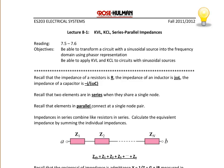Today we will start Lecture 8-1 on KVL-KCL Series and Parallel Impedances, from reading chapters 7.5 to 7.6. At the conclusion of today's lecture, a student should be able to transform a circuit with a sinusoidal source into the frequency domain using phasor representation to the complex number domain, apply KVL and KCL to circuits with sinusoidal sources, and combine impedances in parallel and in series.